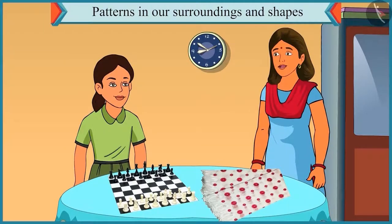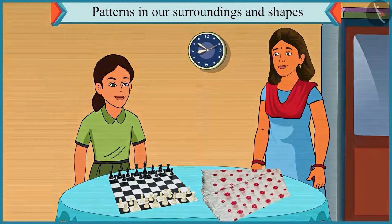Chutki, come on. Now let's go to the kitchen. Okay. Let's go. Chutki, come on. Now look. A pattern is made using triangles on this pot of water. Oh yes.